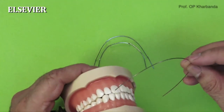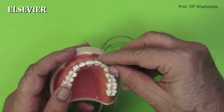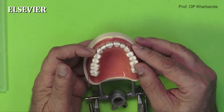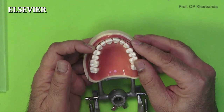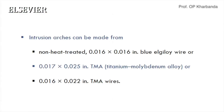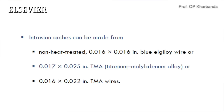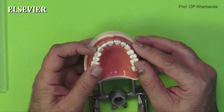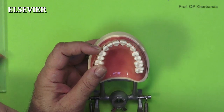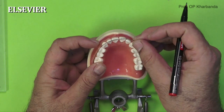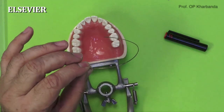The first thing is to select a nice arch form and the wire. The utility arch was traditionally made in 0.016 x 0.022 Elgiloy wire; however, in contemporary orthodontics, TMA wire is used with commonly used dimensions of 0.017 x 0.025 inches. Place the selected arch coinciding with the midline and mark a point at the contact point between the lateral incisor and the canine — this is the point for your first bend for making the vertical arm of the utility arch.